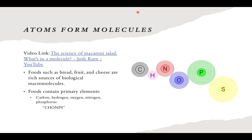All four biological macromolecules contain CHO — carbon, hydrogen, and oxygen. Remember, the six most common elements in biology are C, H, O, N, P, S — the CHOMPS acronym we've spoken about before.